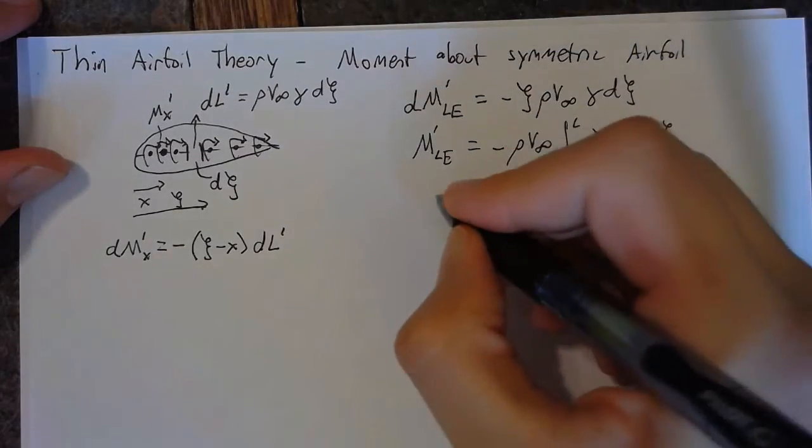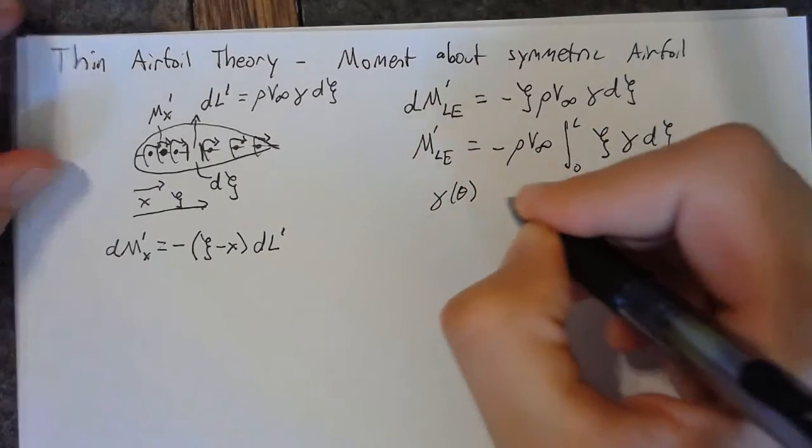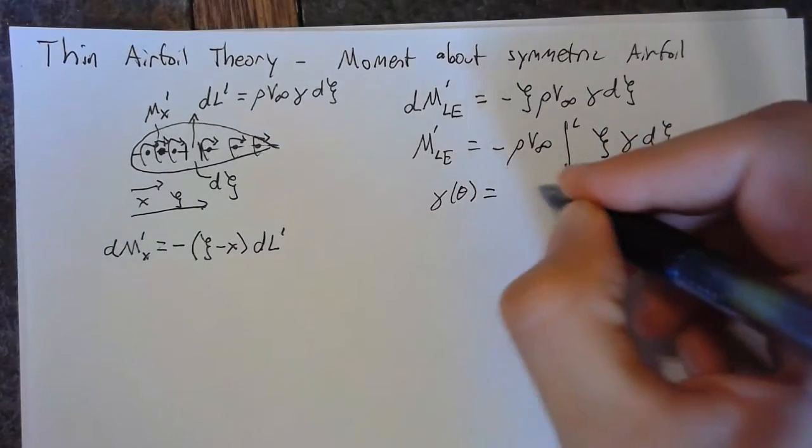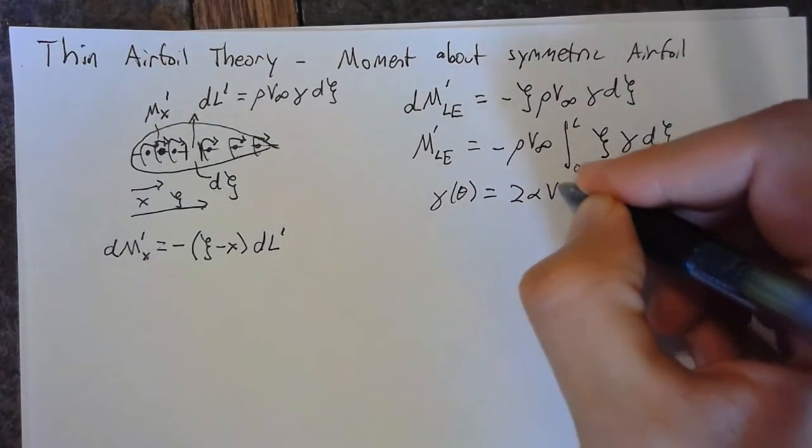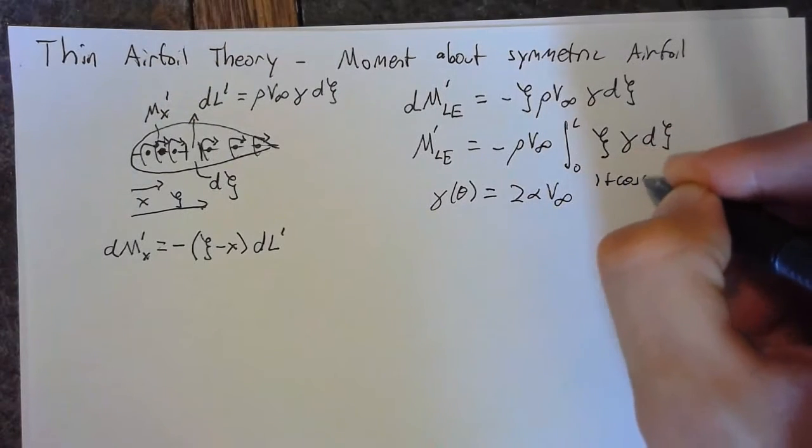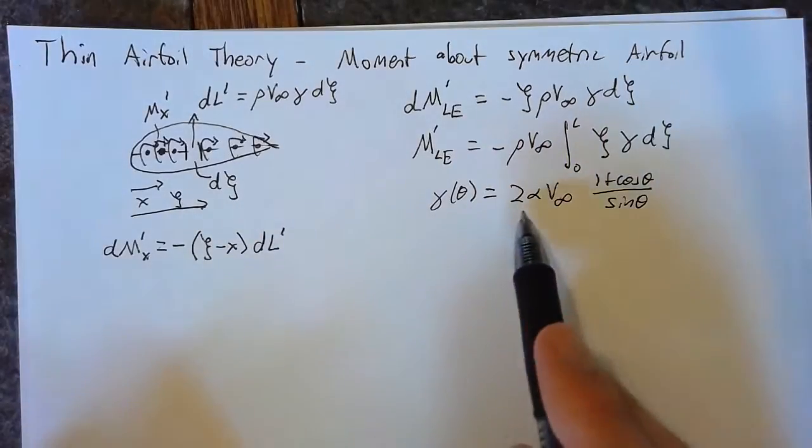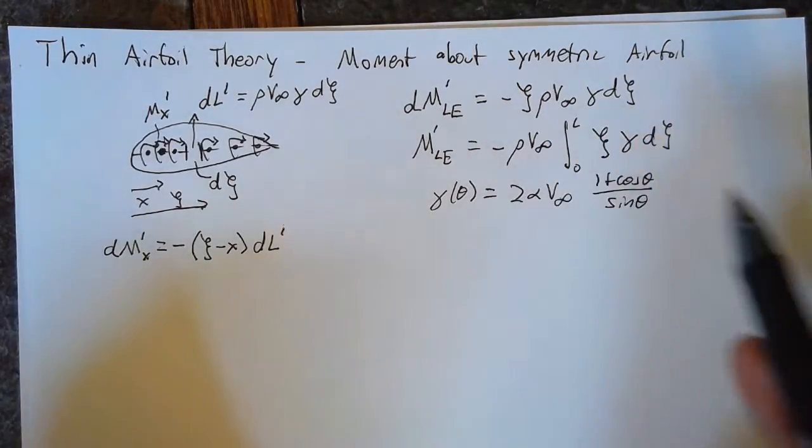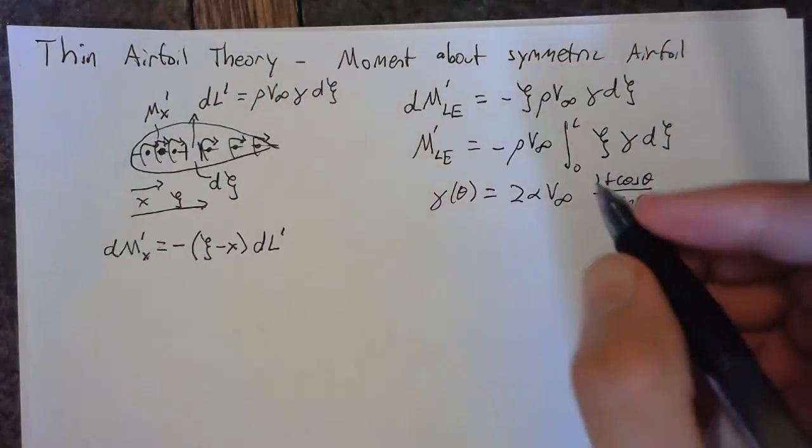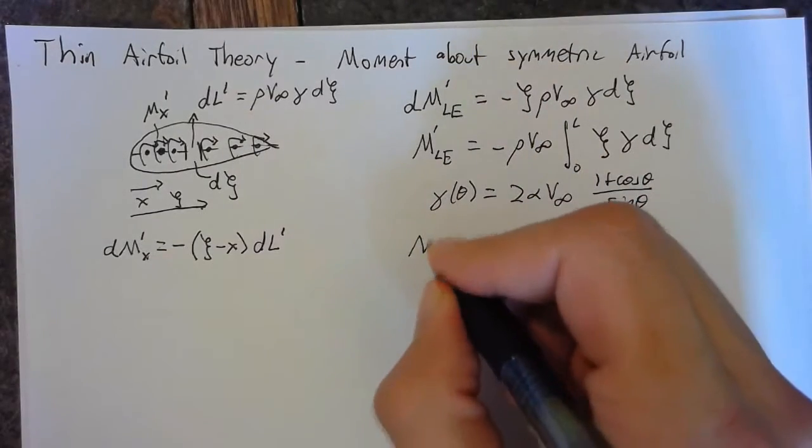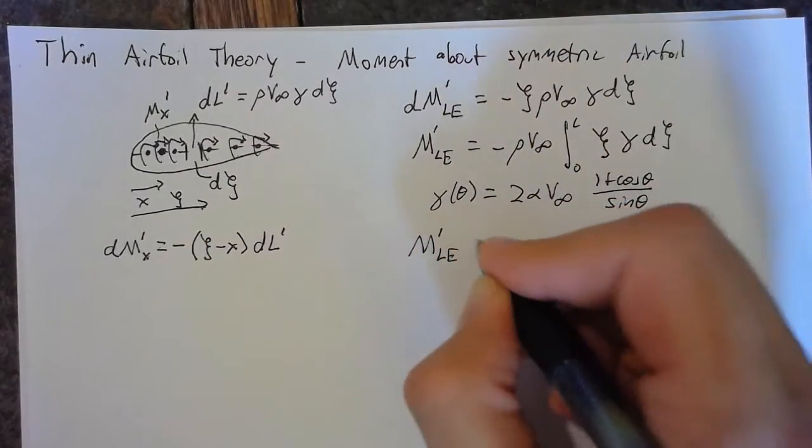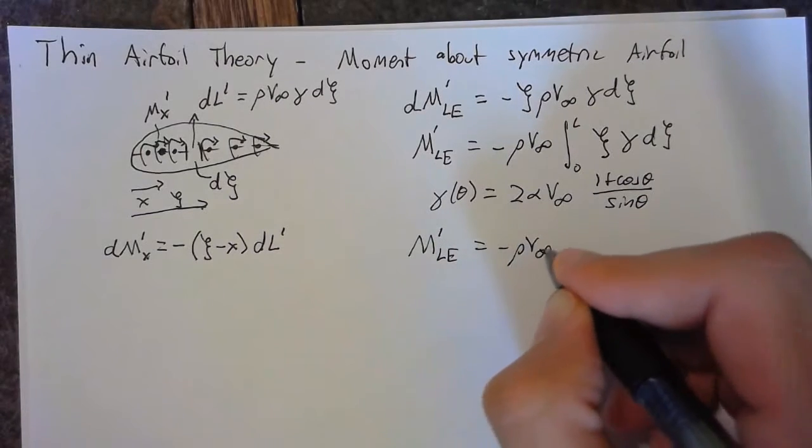Remember that we have γ(θ) defined, which is simply 2αV∞ times (1 + cos θ)/sin θ. So in order to plug this in, we need to transform once again to units of θ.